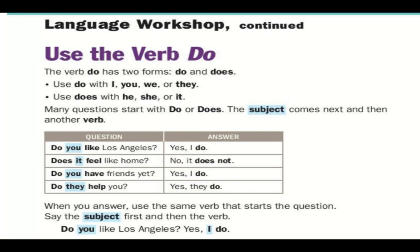'Does' is used with the personal pronouns he, she, or it. Many questions will start with 'do' or 'does.' Remember, 'does' is used with he, she, or it — that's why we only see it with those pronouns. I, you, they, and we all use 'do.'